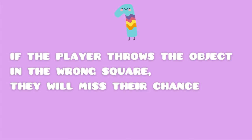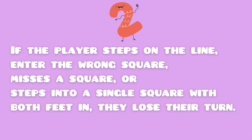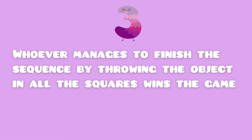First, if the player throws the object into the wrong square, they will miss their chance. Second, if the player steps on the line, enters the wrong square, misses a square, or steps into a single square with both feet, they lose their turn.